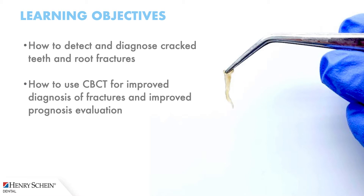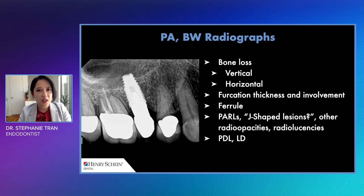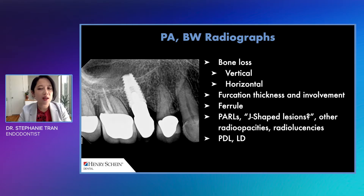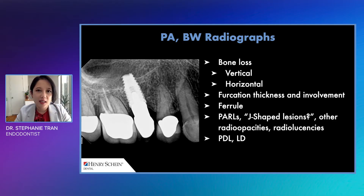We're going to be discussing how to detect and diagnose cracked teeth and root fractures, and also how to use the CBCT for improved diagnosis of fractures and improved evaluation of the prognosis. Of course, we always start off with a patient evaluation — the clinical findings, the radiographs, and the testing. We want to pay special attention to the radiographs and the CBCT when we're evaluating for the possibility of vertical root fractures and cracks.